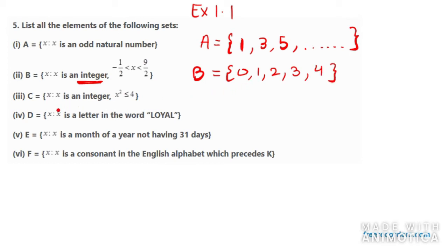So c part. It says x is an integer again and it lies, it is actually less than or equal to 4. x square less than equal to 4. So it can have any value. We need to write integer. Now we can have minus 2, we can have minus 1, we can have 0, we can have 1, we can have 2.